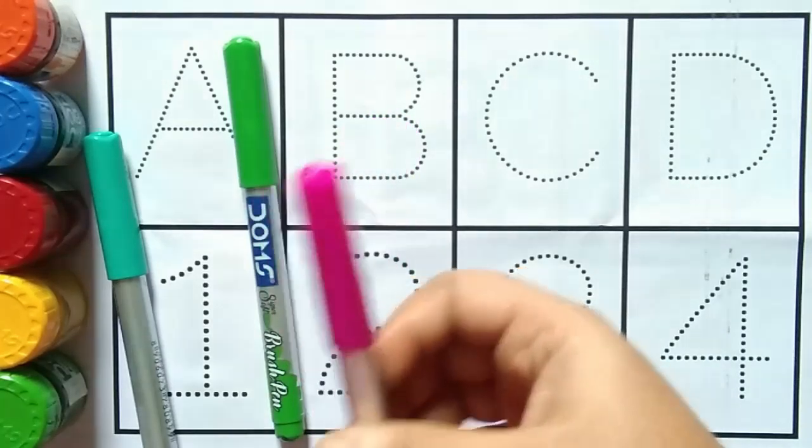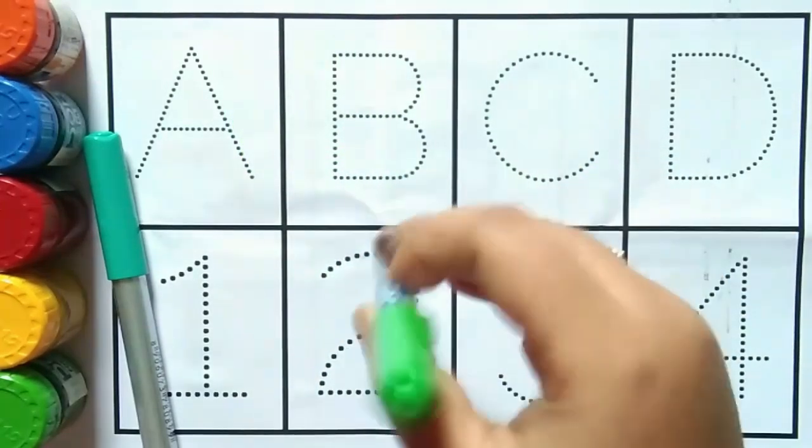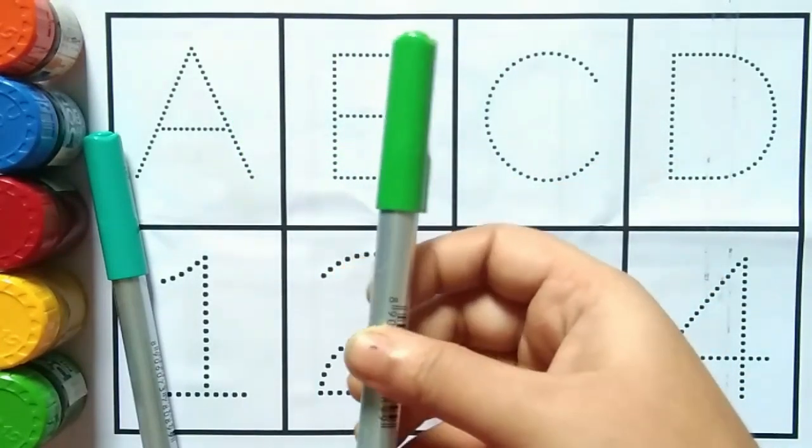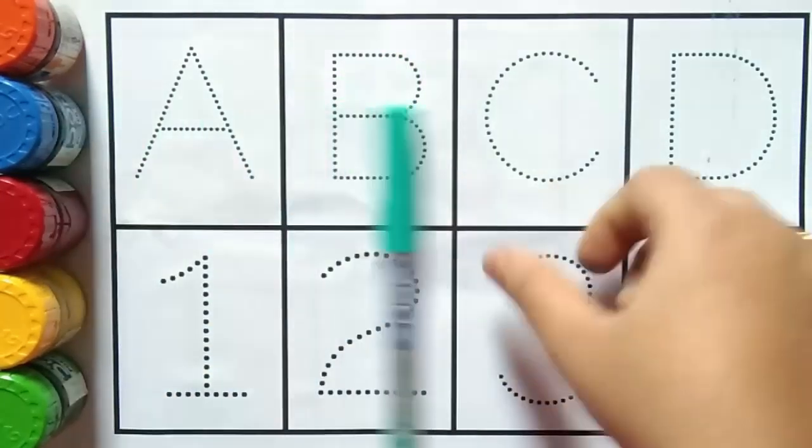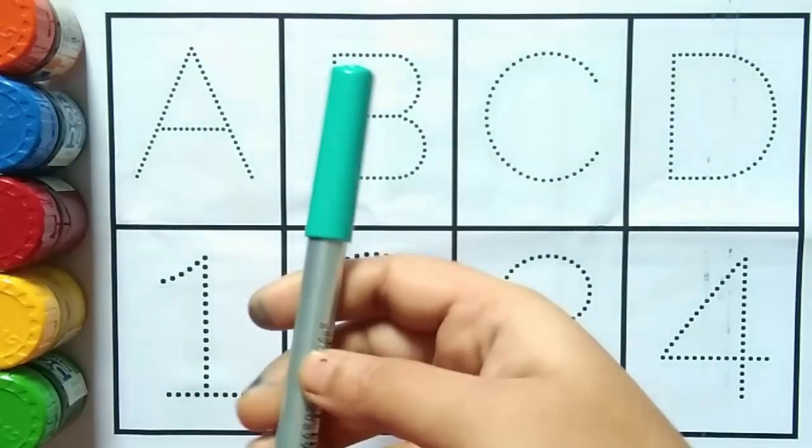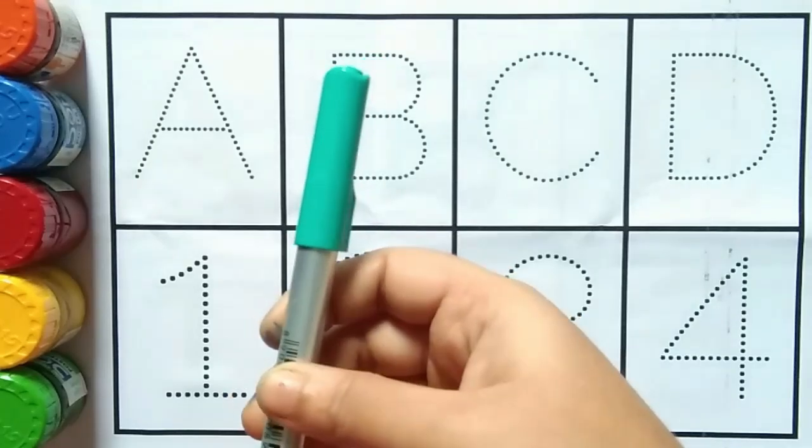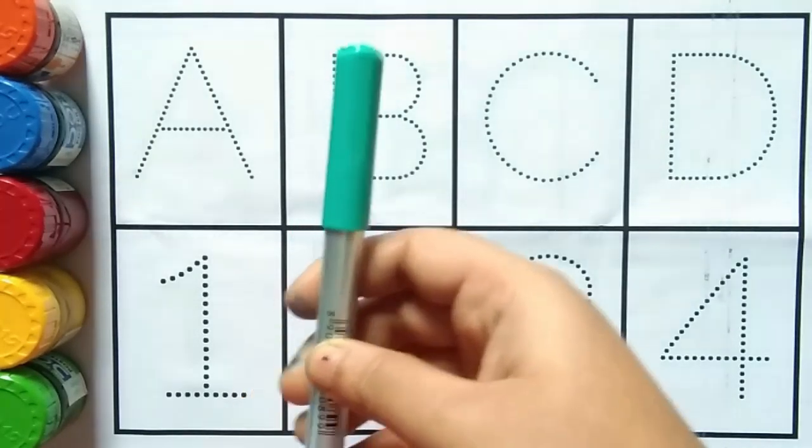This is light green color. What color is this kids? This is light green color. And this is sea green color. What color is this kids? This is sea green color.